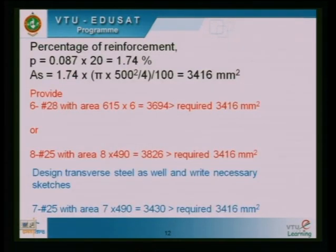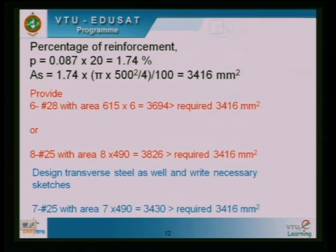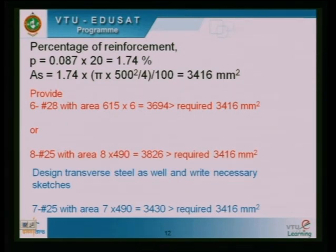With total steel area required = 3416 mm², provide either 6 bars of 28 mm dia (area = 3694 mm²) or 8 bars of 25 mm dia (area = 3826 mm²). Preference is 6 bars of 28 mm dia; if 28 mm is not available, use 8 bars of 25 mm. Design of transverse steel (ties) to be done as usual, and the cross-sectional sketch shows 8 bars symmetrically arranged. Transfer steel is 8 mm at 300 mm spacing.